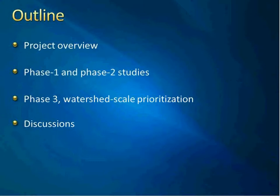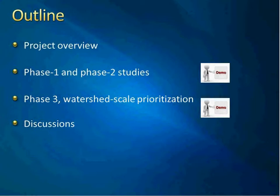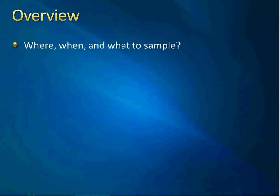Today we mainly focus on the most recent development of watershed-scale prioritization, but I also cover the early stage studies including Phase 1 and Phase 2. The demonstration will be one of the major parts. With water monitoring of pesticides, obviously we cannot sample everywhere, anytime, for everything. So a priority list is a good idea to optimize our project design and make use of our limited resources.